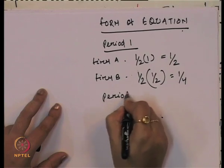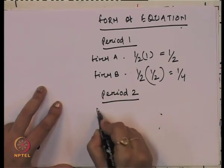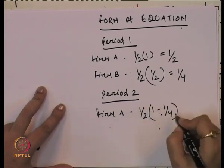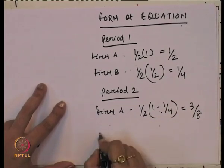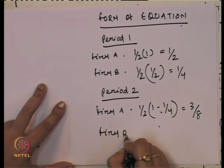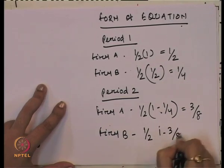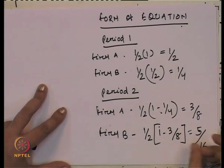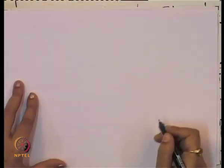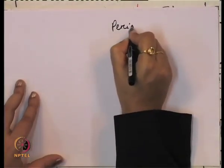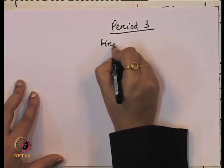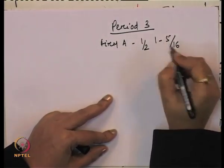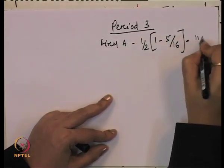In period 2, firm A produces half of one minus one fourth, where one fourth is B's share — that comes to three eighths. Then firm B produces half of one minus three eighths, which comes to five sixteenths. In period 3, continuing this pattern, A's share comes to eleven thirty-seconds.